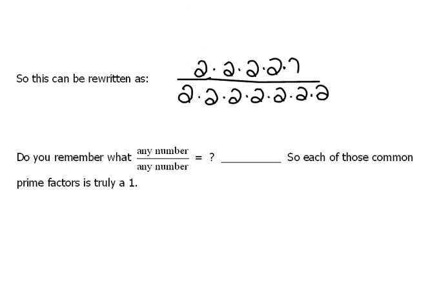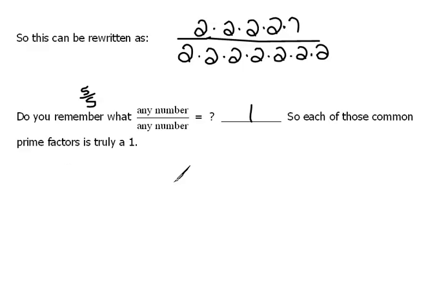Do you remember when we were doing division, whenever we had things like 5 over 5? Any number over itself — what happens when you do that division? That becomes a 1. So, every single one of these common factors — here we have a 2 over a 2, and 2 divided by 2 is 1. Let me write this out again so I can show that.